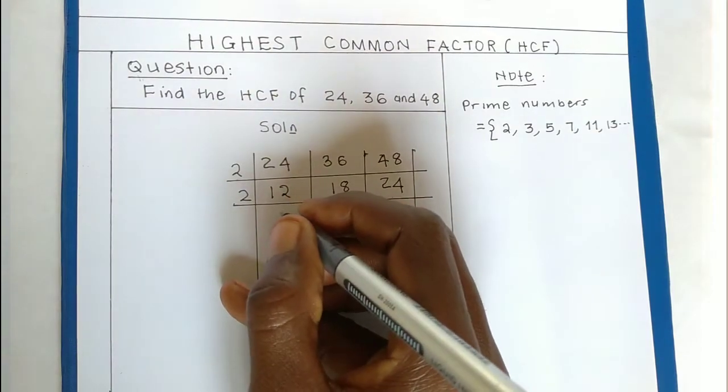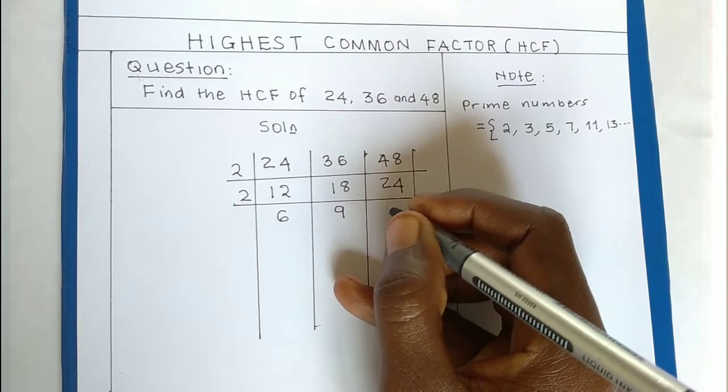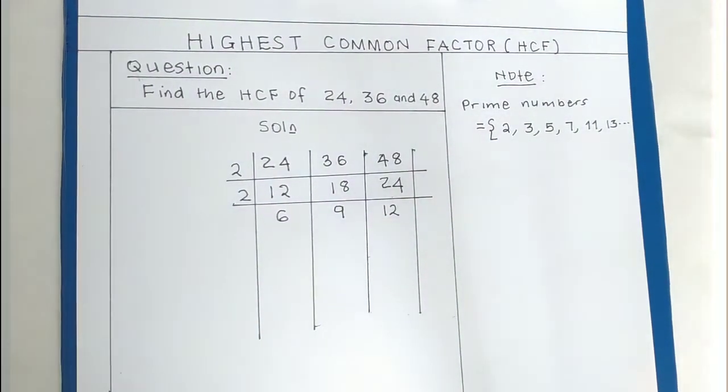Dividing by 2: 12 by 2 gives 6, 18 by 2 gives 9, and 24 by 2 gives 12. Now looking at these three numbers—6, 9, and 12—